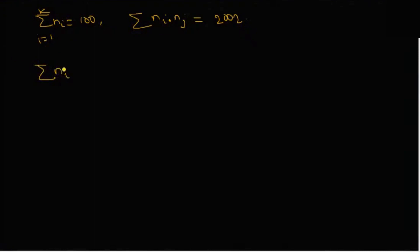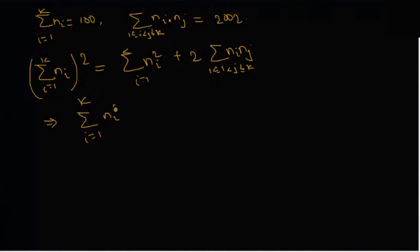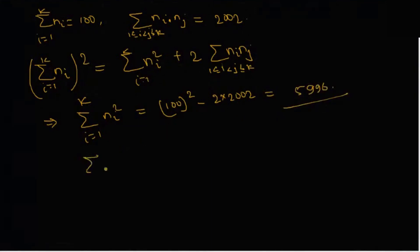Now, the summation of ni for i from 1 to k, squared, equals summation of ni squared plus 2 times the summation of ni·nj for i less than j less than or equal to k. This implies summation of ni squared equals 100 squared minus 2 times 2002, which equals 10000 minus 4004, giving us 5996.